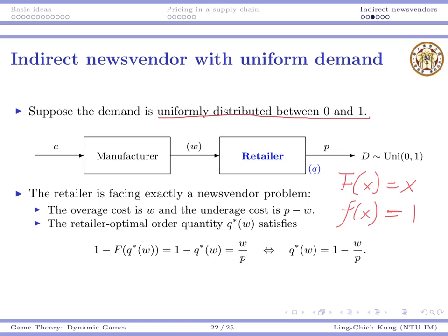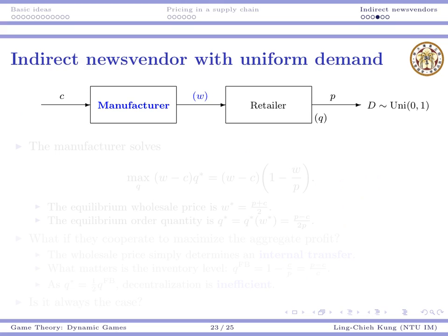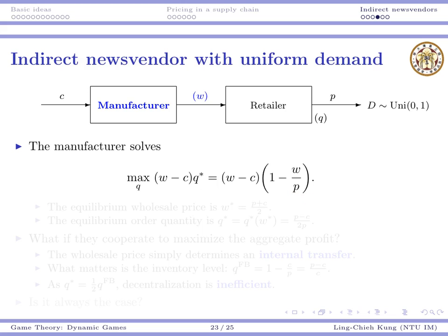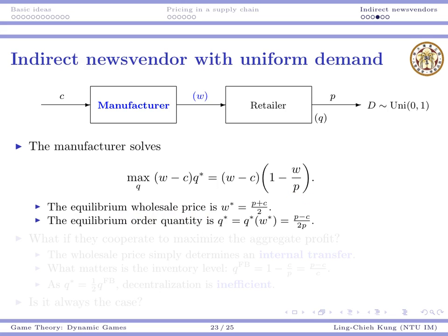When the manufacturer charges a higher wholesale price, the retailer orders fewer units — that's the best way to optimize profit. The manufacturer predicts that q* will be one minus w over p and solves a simple convex program. The equilibrium wholesale price is found as (p + c) / 2.